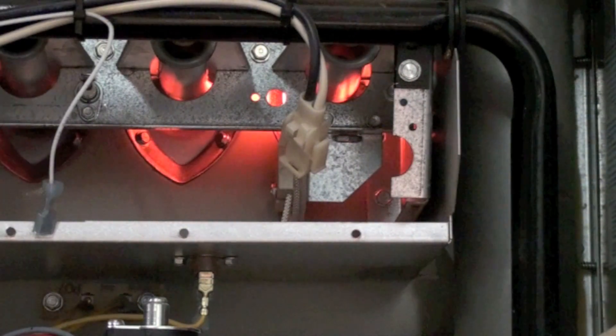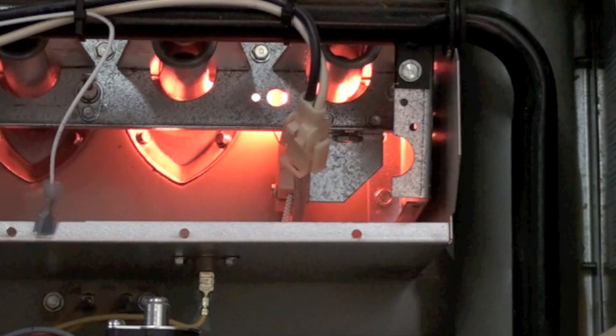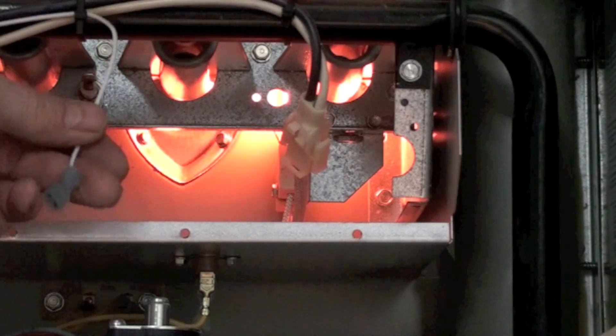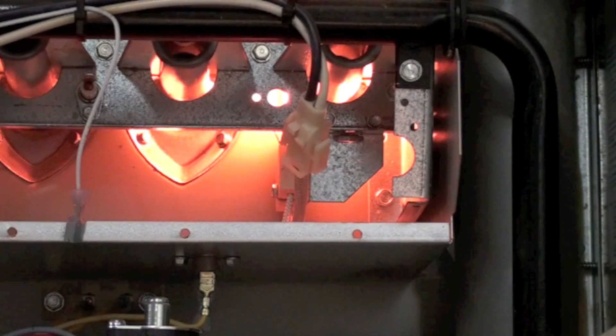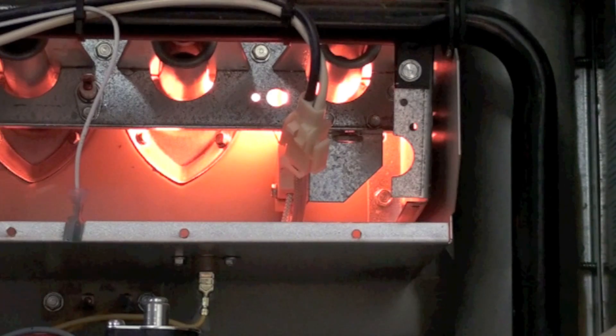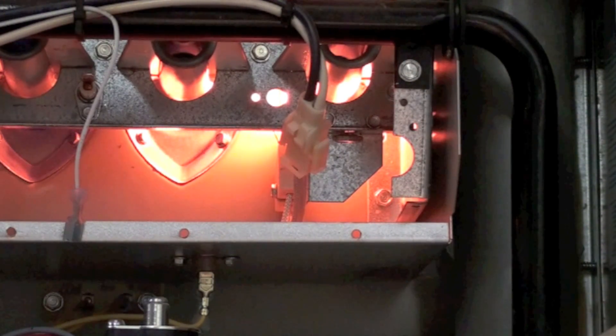The flame rod is nothing but a piece of stainless steel shaft that stays inside the flame. This wire here goes to it to conduct the signal back to the board down below. And if it doesn't sense the proper signal, then it's going to go ahead and shut it off.